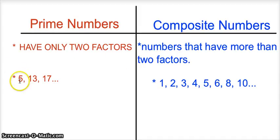Such as 5, 13, and 17, and so on. But composite numbers have more than, composite numbers is the opposite of prime numbers, because they have more than two factors, which means 1, 2, 3, 4, 5, 6, 8, and 10, and so on.